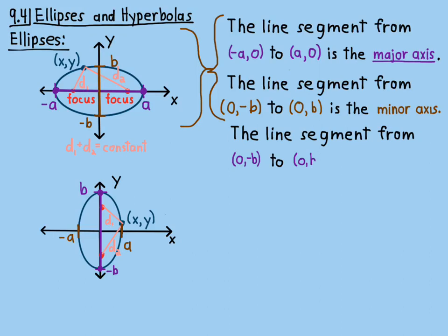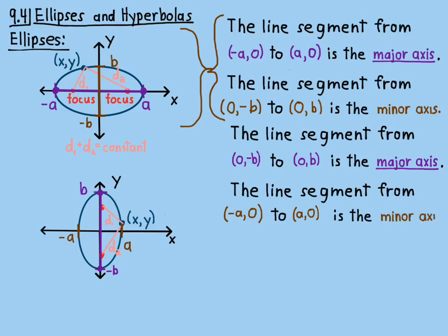On the second one, the line segment from 0 minus B to 0 B is the major axis. So, you can see what's going on here. The major axis is the longer one. And so, I just decided to color the major axis purple. So, sometimes the B's are purple and sometimes the A's are purple. Depends on which orientation the ellipse has. So, the line segment from negative A0 to A0 on the bottom one is called the minor axis. So, that's pretty clear. It's actually a line segment, not a full line. The endpoints are on the ellipse. And, it's either horizontal or vertical. The minor one is the smaller one.